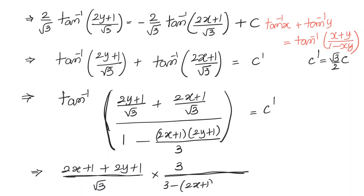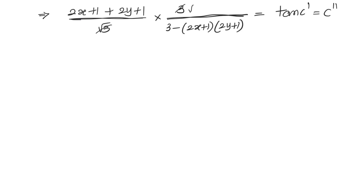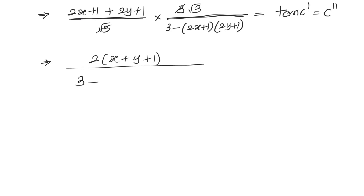In the denominator we can say 3 minus (2x+1)(2y+1) equals tan(c′), which we take as c″. Now let us simplify: we take 2 common to get 2(x + y + 1) divided by √3, and in the denominator we have 3 times [1 minus x minus 2x minus 2y minus 1 minus 4xy] after expanding.